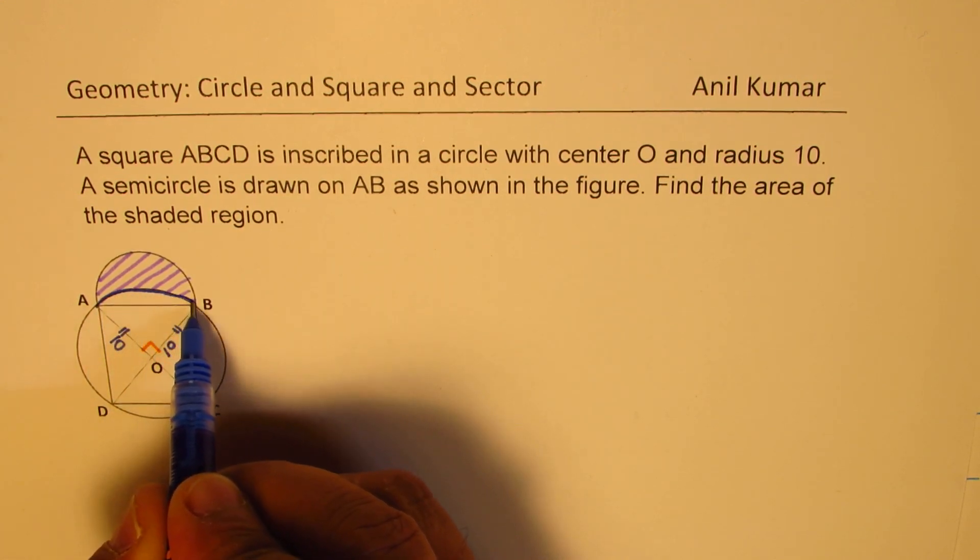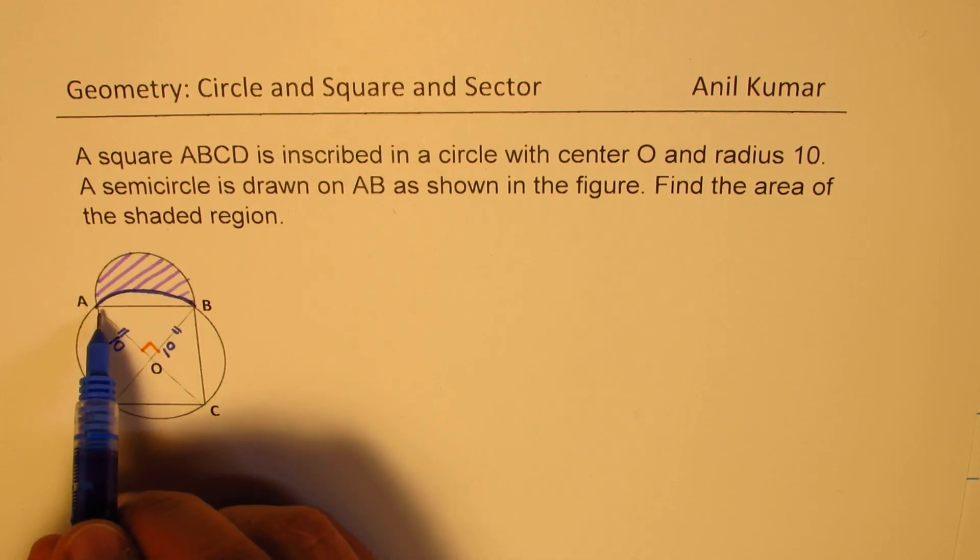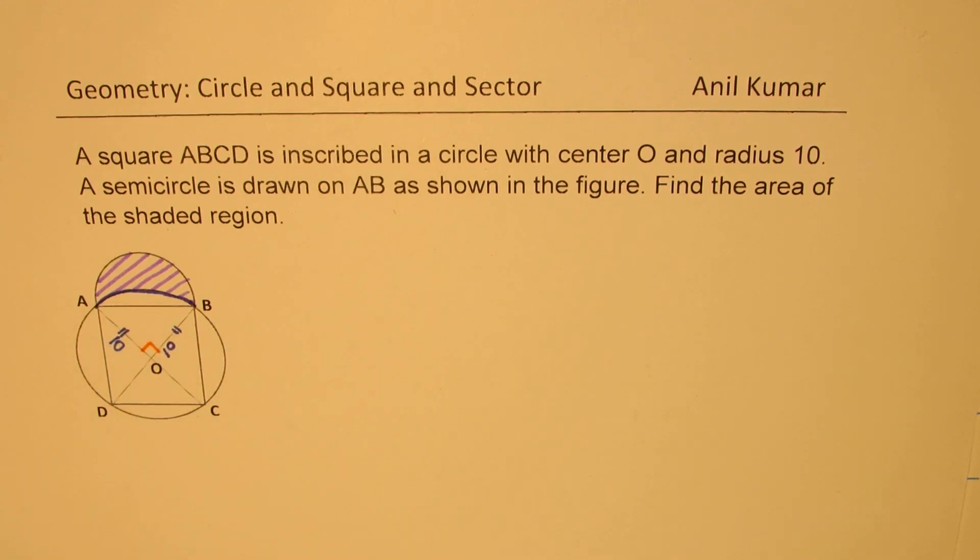We have to actually find area of this portion, which is area of semicircle take away area of this chord. So that is it.